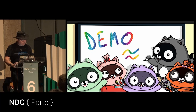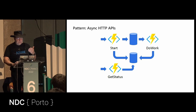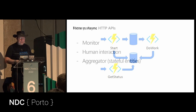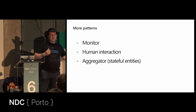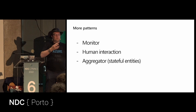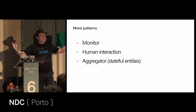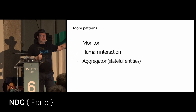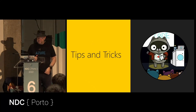Additional patterns include: async HTTP API (polling a status URI for long-running work), monitoring workflows (programmed polling of a system), human interaction (waiting for a person to press a button — inherently unpredictable timing), and aggregator (collecting many events before processing). Links to documentation with pattern descriptions and implementation examples will be provided.